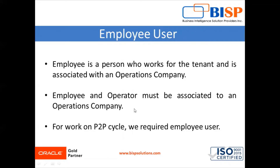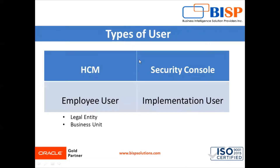In the purchasing application, if you want to create any document — that could be a requisition or purchase order — we can perform document creation only from an employee user. Now regarding types of users: in our earlier session we created our user from the security console. A user is classified into two types — one is from HCM and the other is from the security console. The HCM user is called an employee user, and the user created from the security console is called an implementation user. To create an employee user we require legal entity and business unit information.